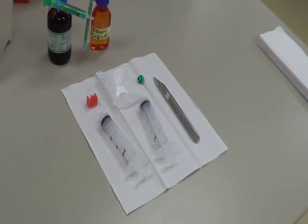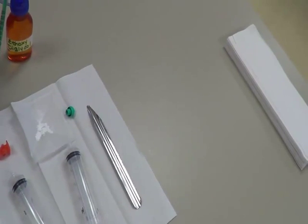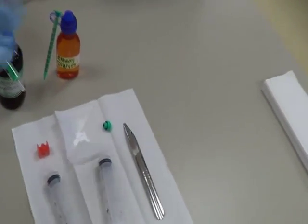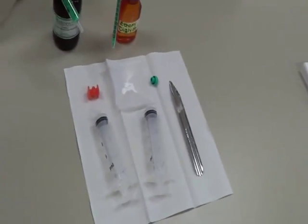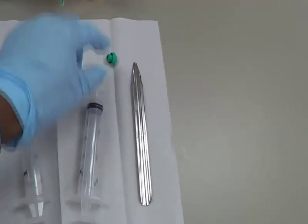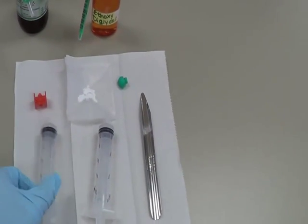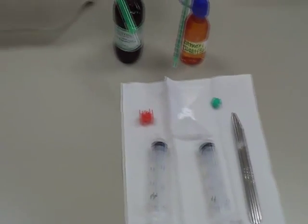For this we have Lecithin Isopropyl Palmitate, that is in short it is called LIPS, and Ethoxidiglycol. We have a mock drug, and we have Luer Locks and Luer Tips over here. And we have two 20ml syringes. So this is what we need.